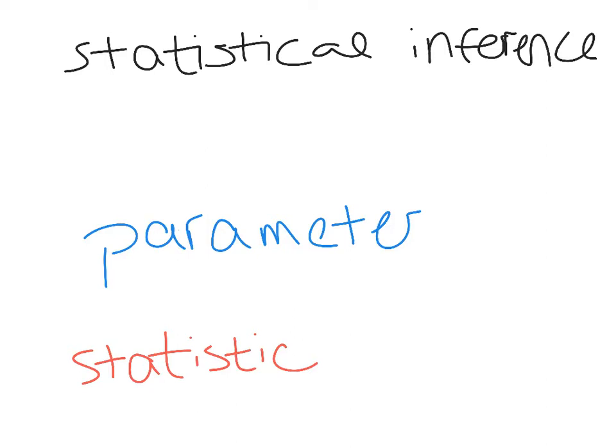This chapter is going to focus on sampling distributions — what we can do with those, how they look, how we analyze them, and how we can use them. So we need to get into some vocabulary first, the first thing being statistical inference.